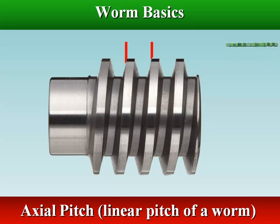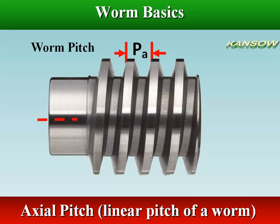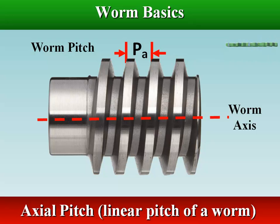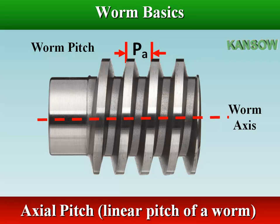Axial pitch is also known as the linear pitch of a worm. It is the distance measured axially — that is, parallel to the axis of the worm — from a point on one thread to the corresponding point on the adjacent thread.